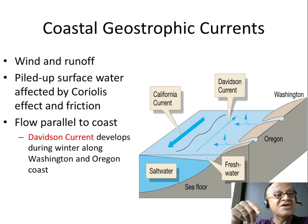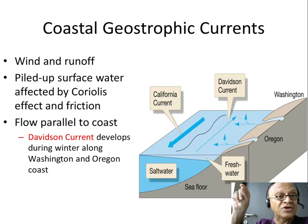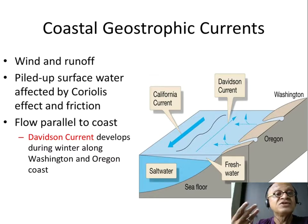Remember the Subtropical Gyre. You can balance the pressure gradient, or the gravity pull, to the Coriolis and you have Geostrophic Currents.